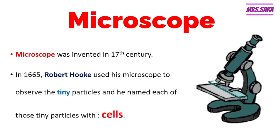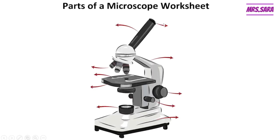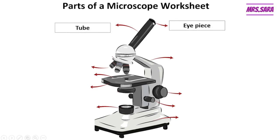This is the shape of the microscope, Primary Six. Each part of the microscope has a name. The first part is called the tube. This part here is called the eyepiece — we use the eyepiece to look through it to see what is under the microscope.